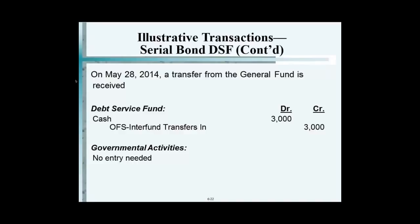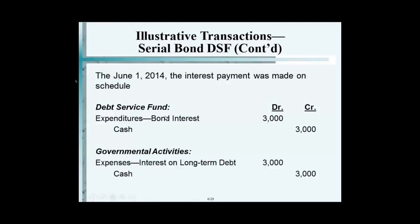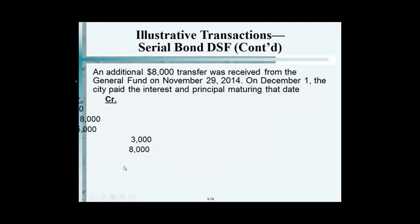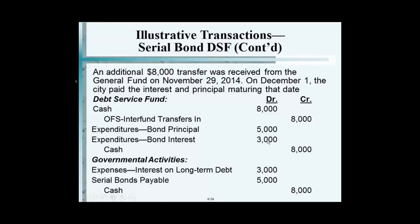Interest payment is made. Notice how we showed not just expenditure — we label it as bond interest. And instead of expenditure, we show expense. They get another $8,000 from the general fund. Classic entry: credit cash, show each of the components separately. Now we call it expense, and we are amortizing this because we are debiting a payable, reducing those serial bonds.